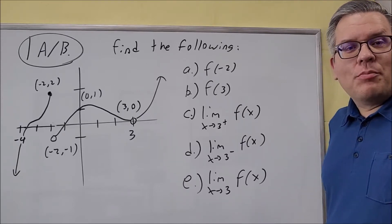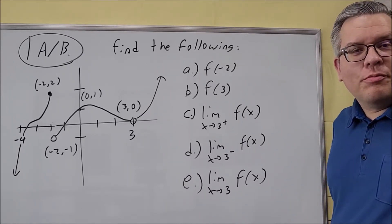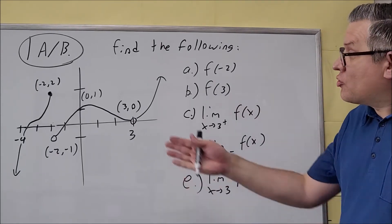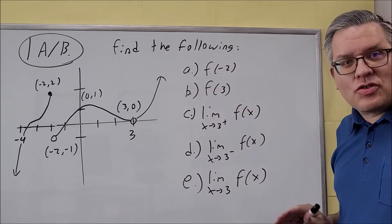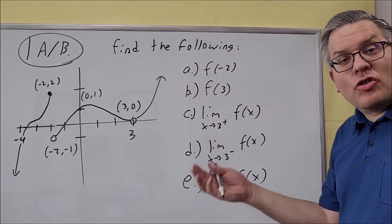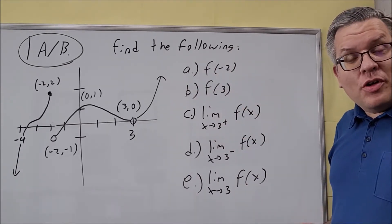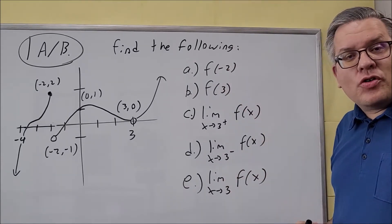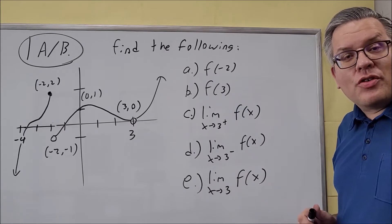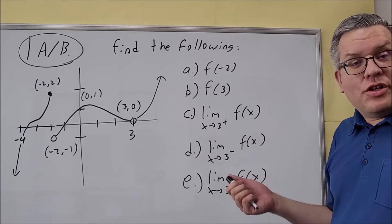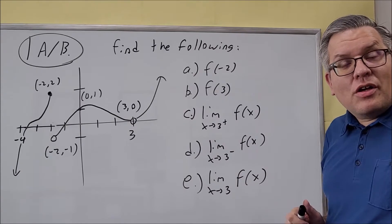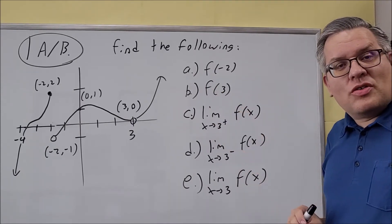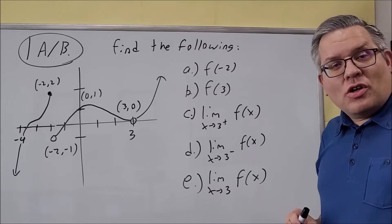This is the final exam sample review. We're going to go through the version A's on this one — version A and version B for number one because it's a longer problem, but version A's for the rest. The problems on the final exam will be similar to the ones you see here. If there's a section covered this semester that does not appear on the sample exam, it will not be on the actual final exam. This will tell you all the different types of topics you'll be responsible for knowing.